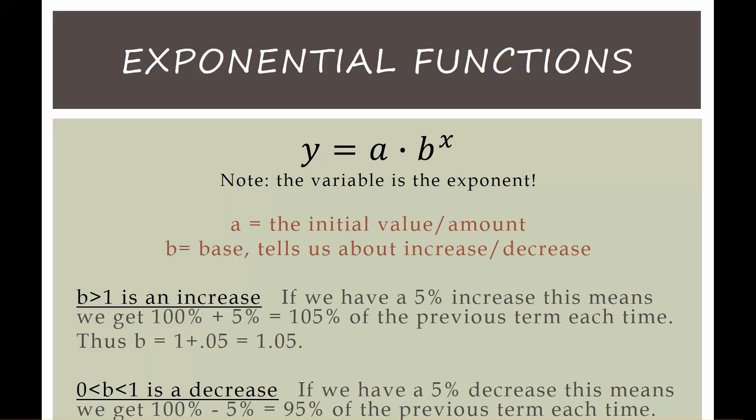In our situation, since we have a 5% increase, this means we're going to get 100% of our koalas plus an additional 5% each year, so we're really getting 105% of the previous term each time. So our b value then is going to be 1 plus 0.05, or 1.05 in decimal form.